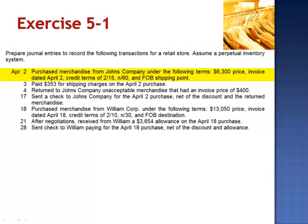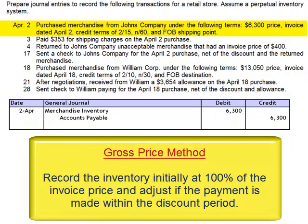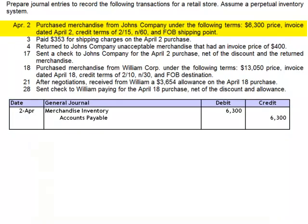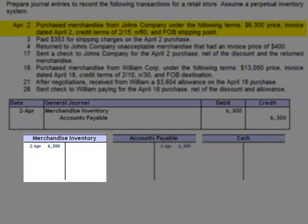So let's return to the journal entry. On April 2nd, we're adding $6,300 of merchandise to the inventory database. The journal entry is a debit to merchandise inventory $6,300 and a credit to accounts payable. If we take the discount, we'll adjust the cost of the inventory database, but we won't do that until the payment is made. Posting to the T-accounts: debited merchandise inventory and credited accounts payable. Our inventory database currently has $6,300 of merchandise.